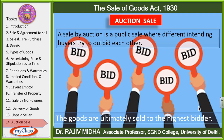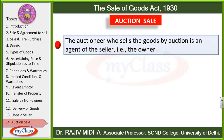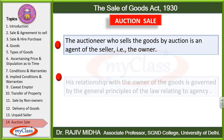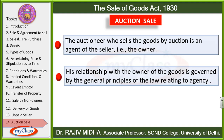The goods are ultimately sold to the highest bidder — जो व्यक्ति सबसे ऊँची बोली देता है, goods उसको बेच दी जाती हैं। The auctioneer who sells the goods by auction is an agent of the seller, that is the owner. Auctioneer और owner of the goods का relation principal और agent का होगा, जो contract of agency के general principles से govern होगा।